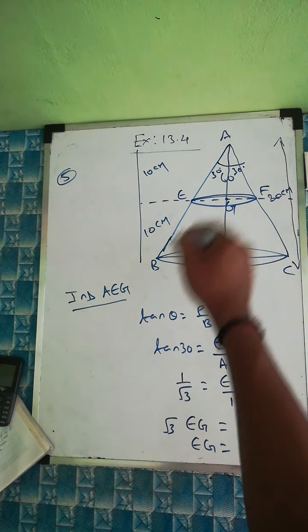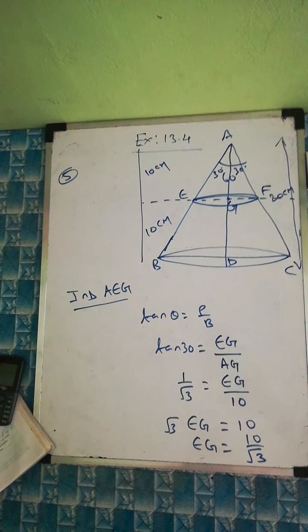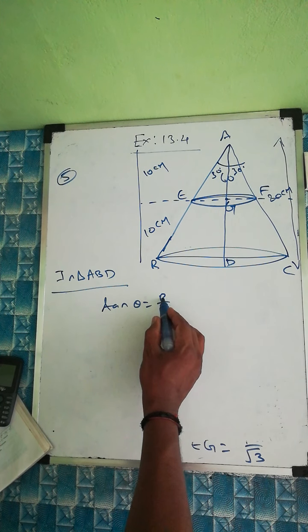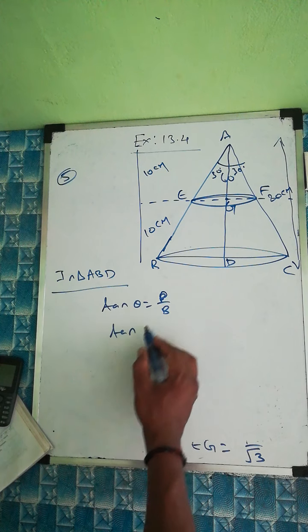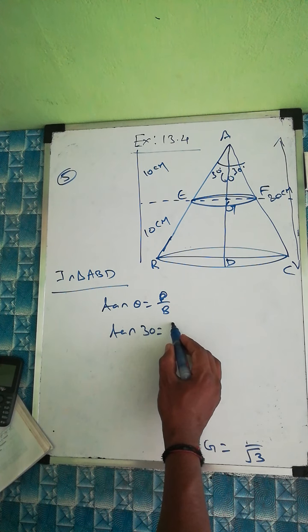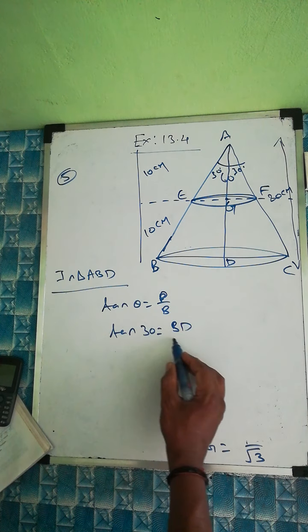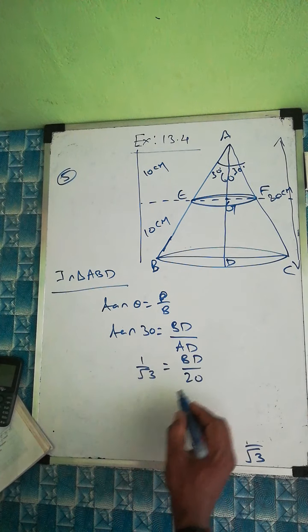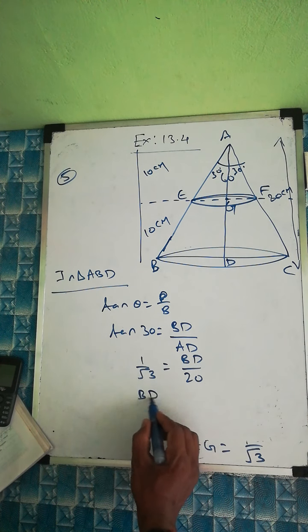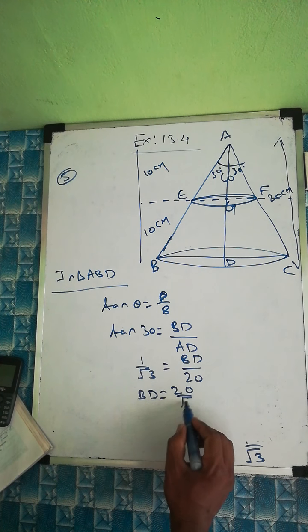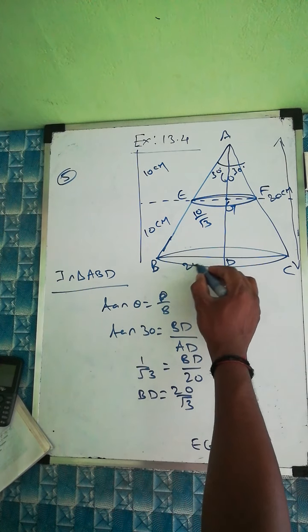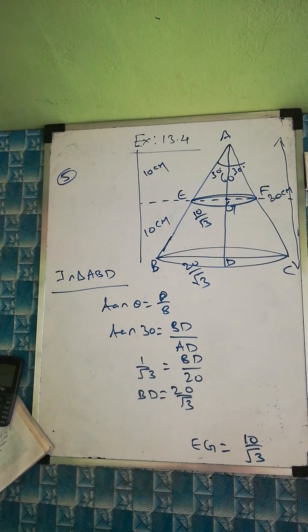Now we take triangle ABD. Using the same process, tan(theta) = perpendicular by base. So tan(30°) = BD / AD. Here tan(30°) = 1/√3 and AD = 20 (total height). Therefore BD = 20/√3. So the small radius EG = 10/√3 and the large radius BD = 20/√3.